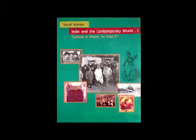The remaining men and all women were classed as passive citizens. To qualify as an elector and then as a member of the assembly, a man had to belong to the highest bracket of taxpayers. The constitution began with a Declaration of the Rights of Man and Citizen. Rights such as the right to life, freedom of speech, freedom of opinion and equality before law were established as natural and inalienable rights — they belonged to each human being by birth and could not be taken away. It was the duty of the state to protect each citizen's natural rights.